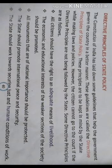Some directive principles are as follows. Some laws and policies are made by the government, and those laws and policies should be kept in mind by the government. First: all citizens should have the right to an adequate means of livelihood. Adequate means satisfactory; livelihood means the necessities of life — the basic things they need — the government has to fulfil these. Second: the economic and educational interest of the weaker sections of society should be promoted — for poor people, the government has to provide some facilities.